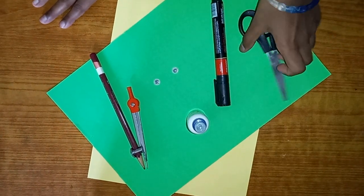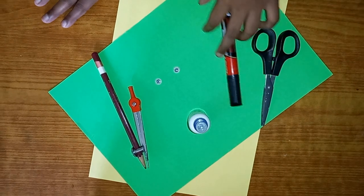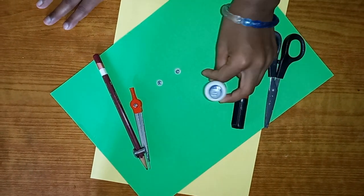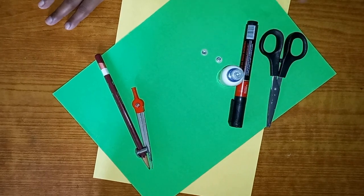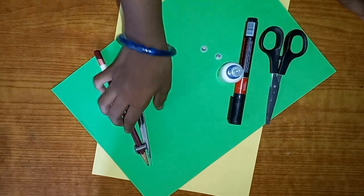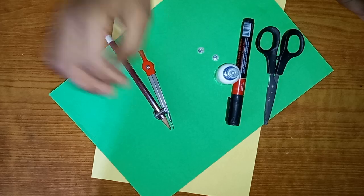You'll need scissors, a marker, some glue, googly eyes or you can draw and cut them, and a compass. Let's start.